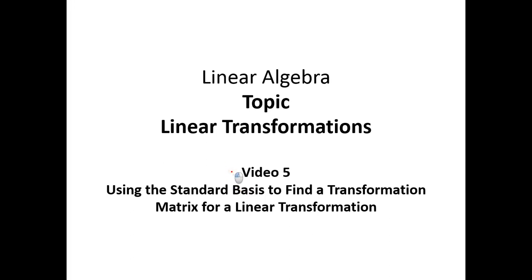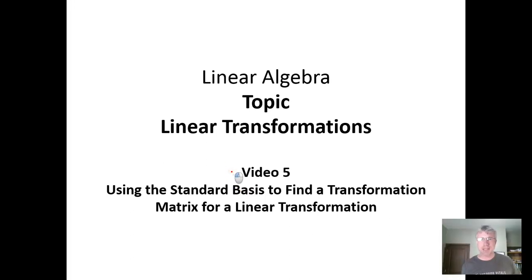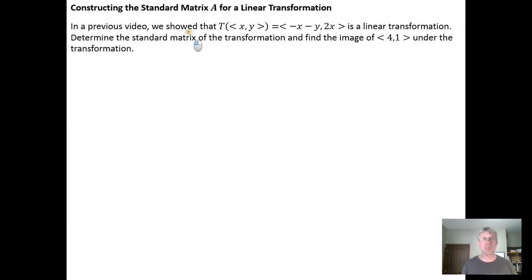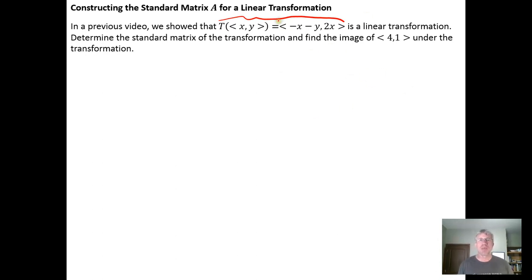In this video we're going to show how the standard basis of a space can be used to find the transformation matrix for a given linear transformation. In a previous video we already showed that this transformation is a linear transformation — that was video 2. Because it is a linear transformation, the transformation matrix A will exist, and our job is to find that transformation matrix.